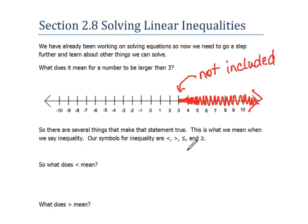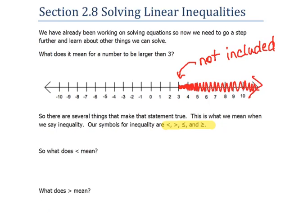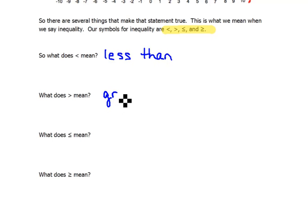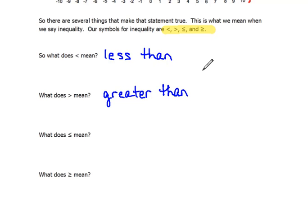Whenever we talk about inequalities, we need to talk about our symbols. There are some very specific symbols that we use for inequalities. The symbol pointing to the left means less than, and the symbol pointing to the right means greater than. In the past, you have probably just looked at it as pointing at the smaller number, or the alligator eats the larger number. But you really need to start paying attention to the actual vocabulary, because that's going to be extremely important as we move further in mathematics.